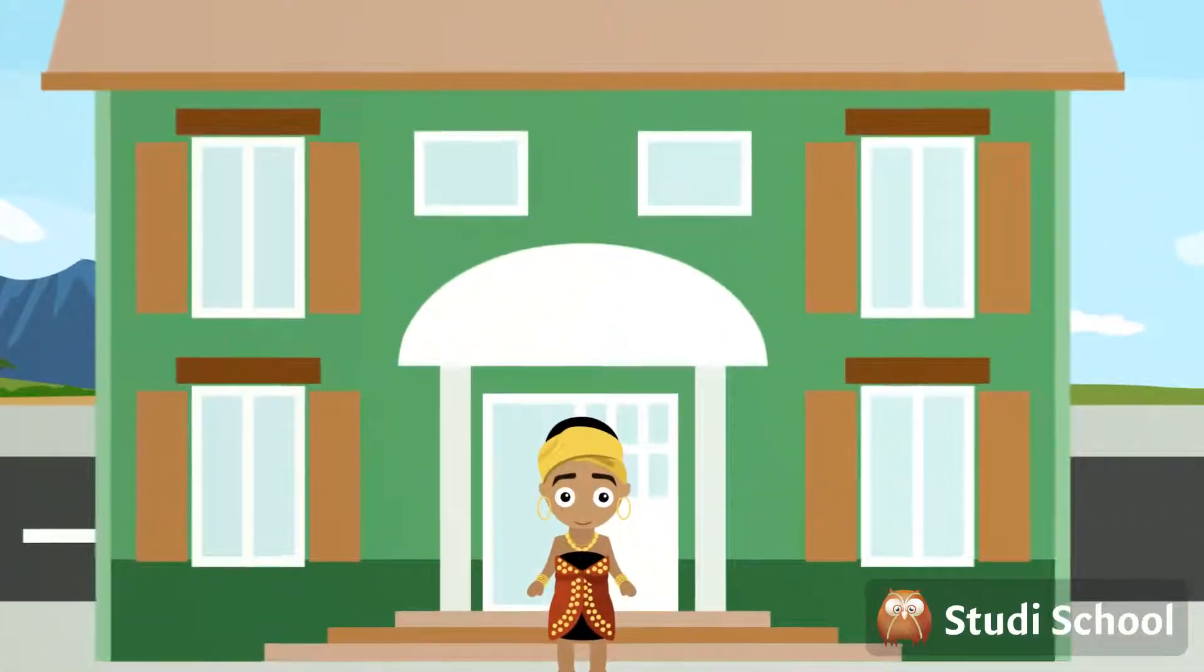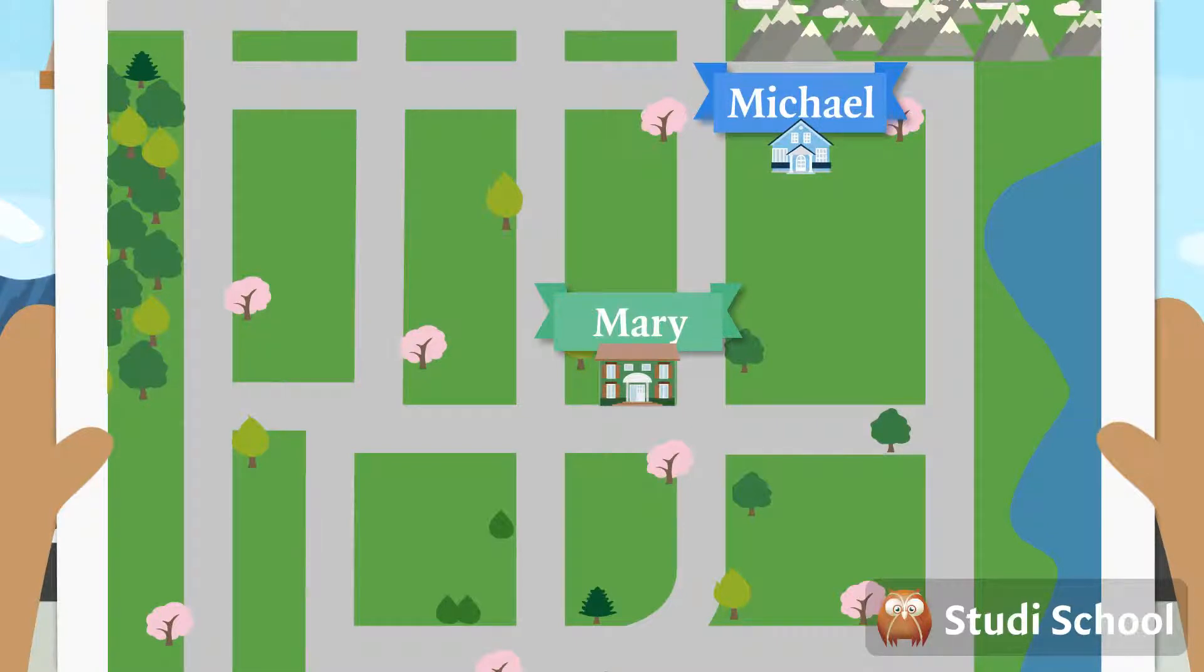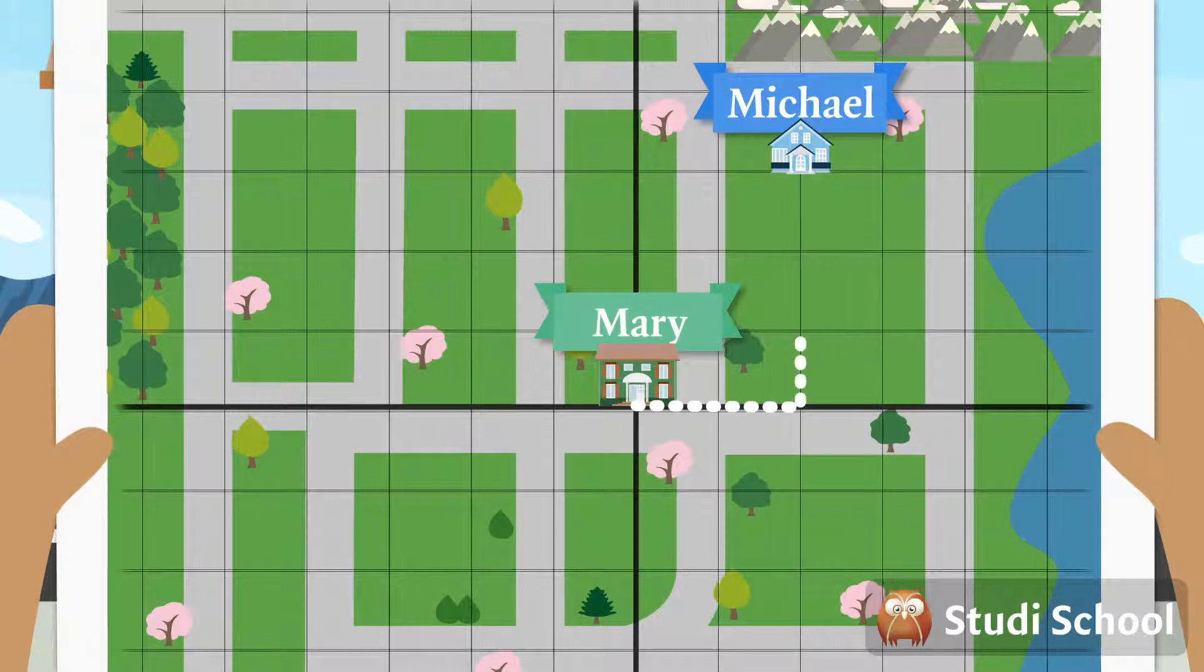This is Mary's house and this is her friend Michael's house. Each house is located at a different point on the map. To get from Mary's house to Michael's house, we have to move three points upwards and two points right.